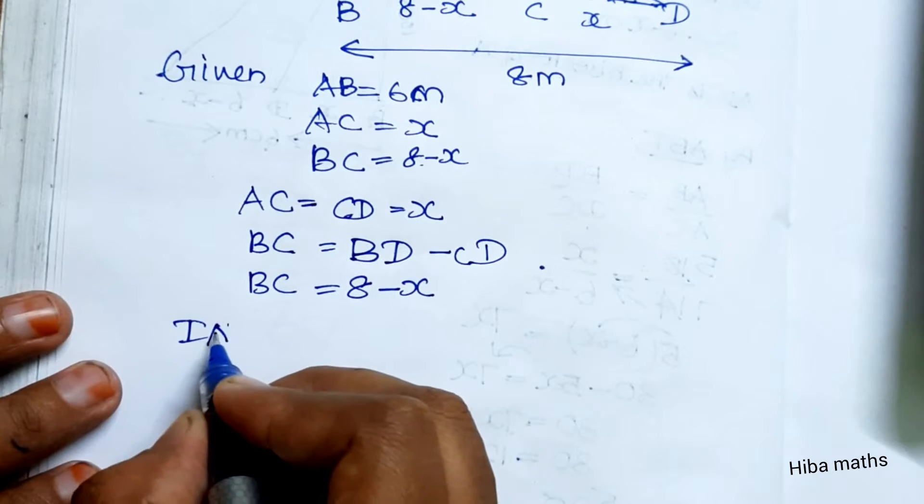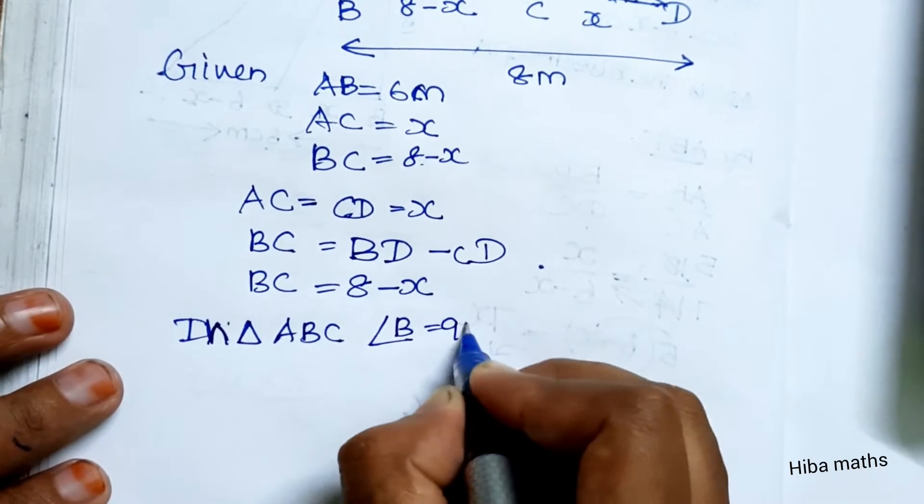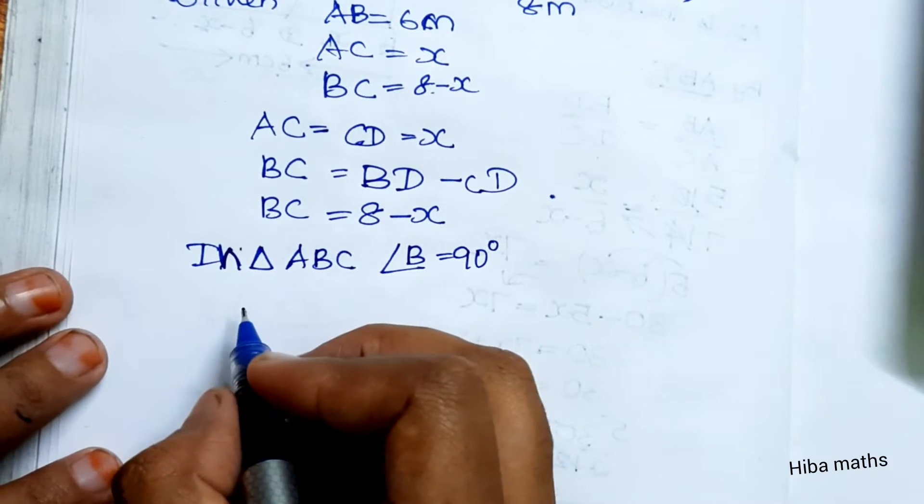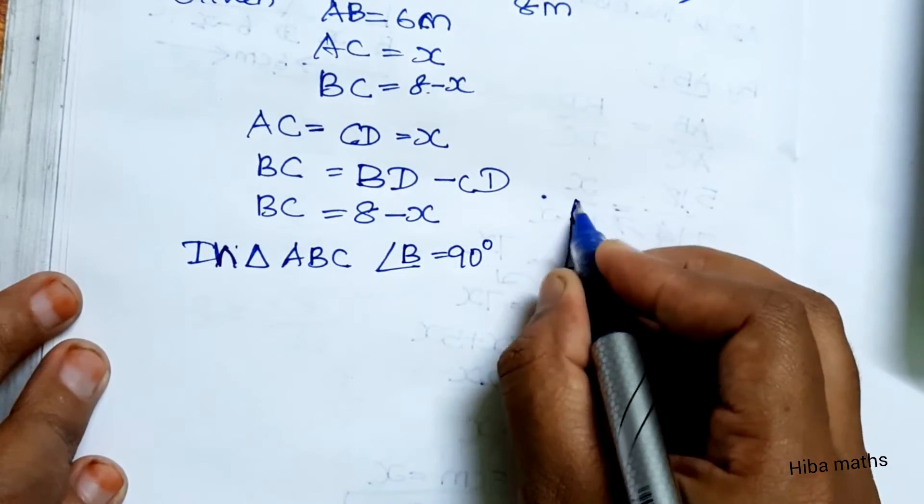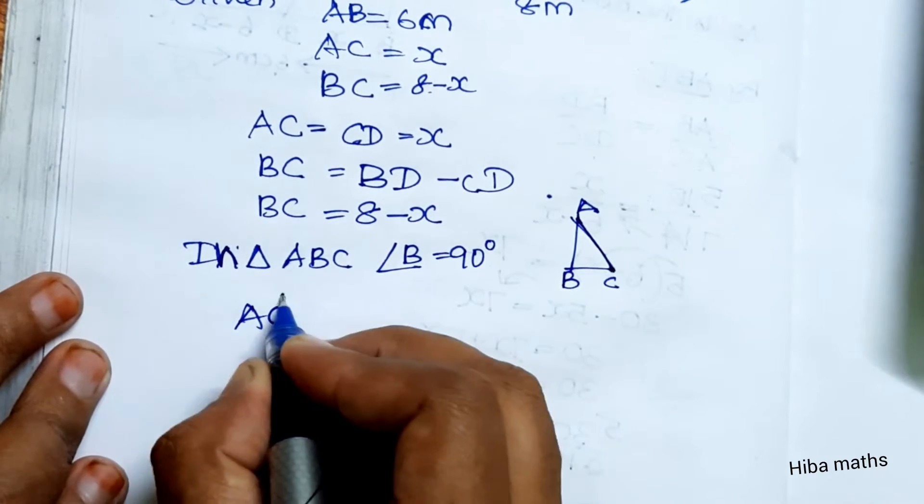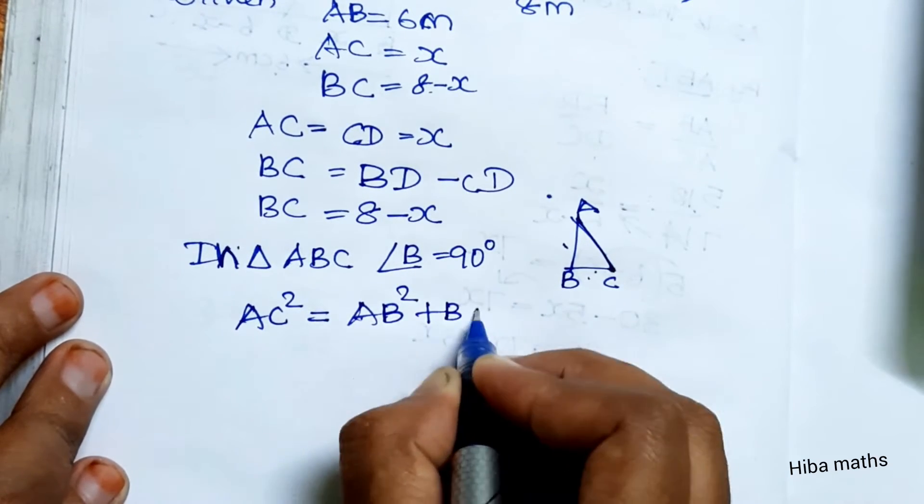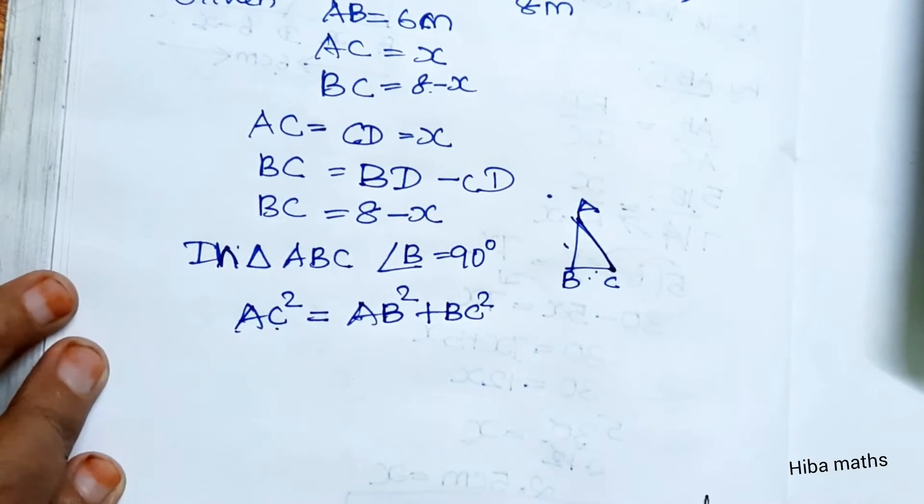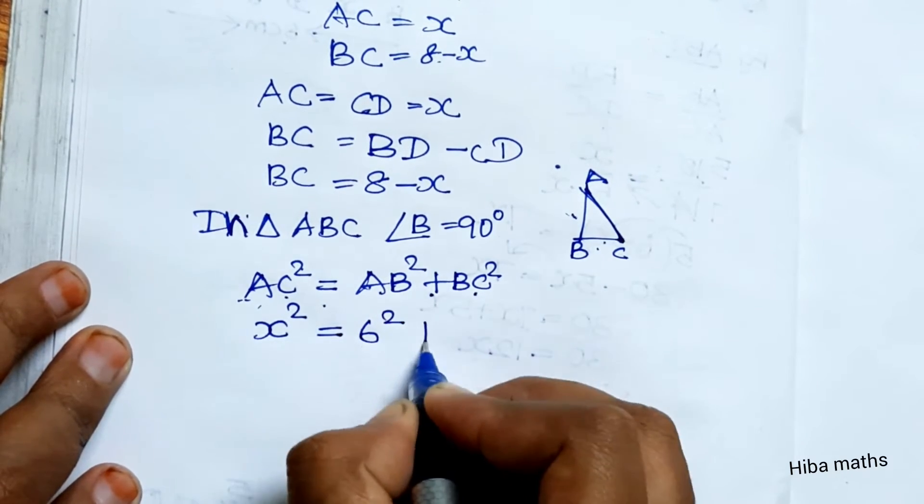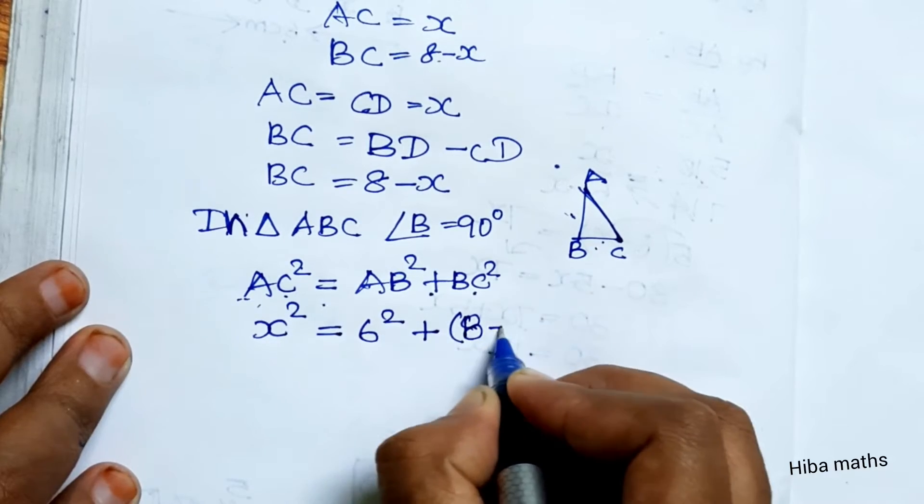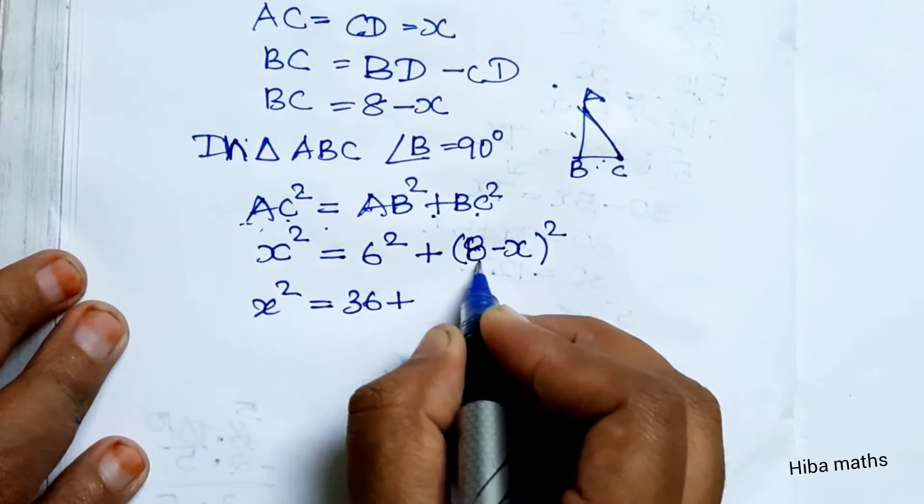In triangle ABC, angle B is 90 degrees. The angle at the base between the lamppost and ground is 90 degrees. We use Pythagorean theorem: the square of the hypotenuse equals the sum of squares of the other two sides. AC squared equals AB squared plus BC squared. Now substituting all values: x squared equals 6 squared plus (8 minus x) squared.